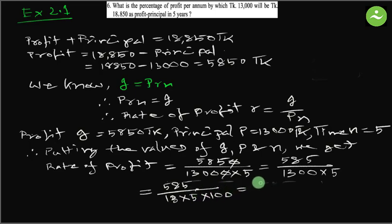Equals 585 divided by 5 into 13 is 65, multiply by 100. Why we separate by 100? Because we have to express the result as percentage or as rate of profit. Equals, if we simplify 65 and 585, it is 9 times, so we can write 9 multiply by 100 equals 9 percent.